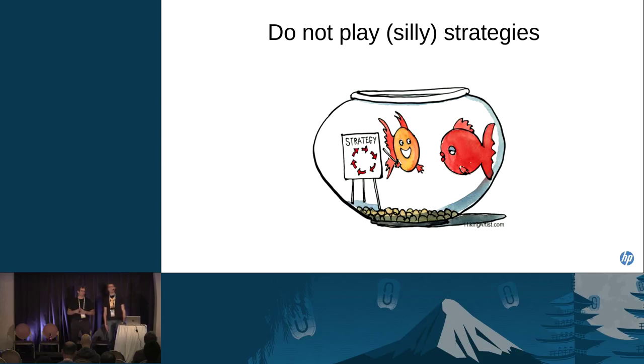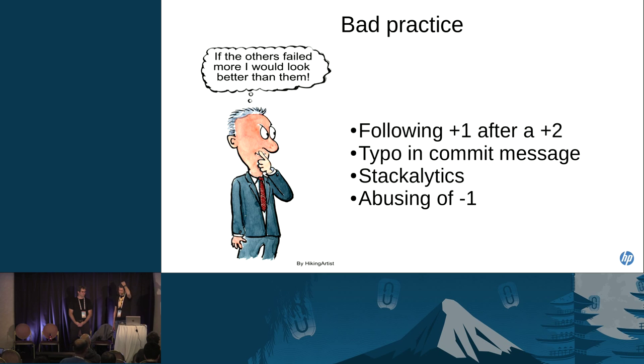You can decide to play some strategy to try to get attention from reviewers. We have analyzed some of these strategies and we think actually they don't work. So we call these silly strategies. A Swift core reviewer told me that they have found sometimes people prefer to give a safe plus one after a plus two from a core reviewer, which is fine. It can happen. But if this becomes a habit, probably this is not going to help in growing your credibility inside the community. The other thing, this is funny. If you put a typo in the commit message, the title of the commit message appears on IRC. So if you have a typo, probably you get an immediate minus one. That means immediate attention from reviewers. Again, it's a strategy which works, but it's not very helpful.